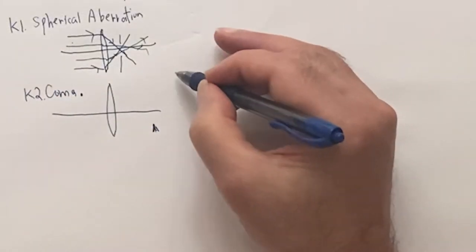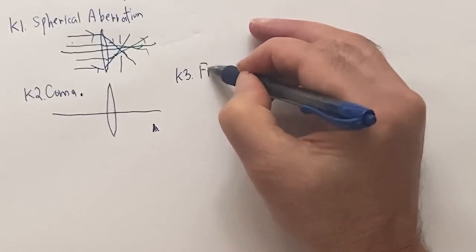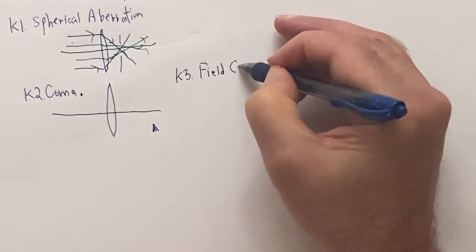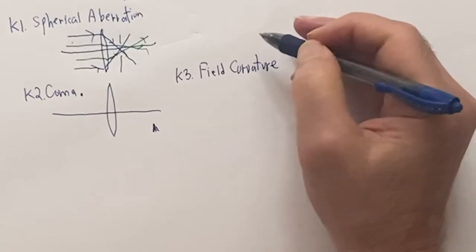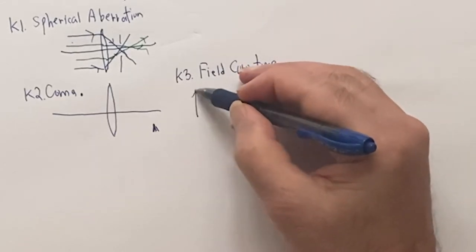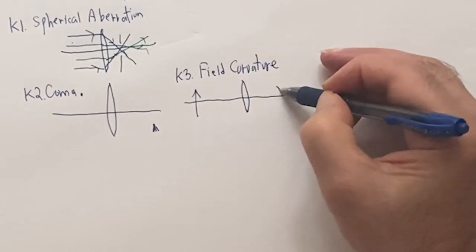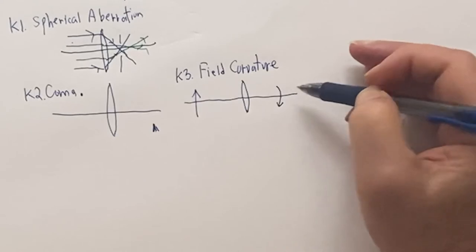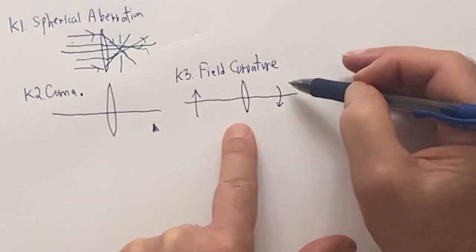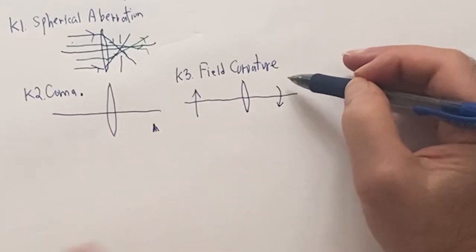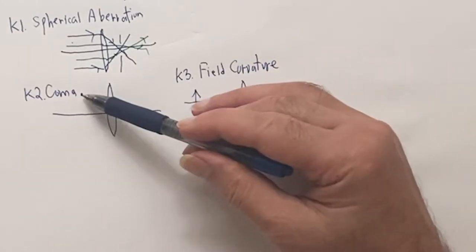We move on to K3 — field curvature, or curvature of field. An arrow standing upright, when imaged through the lens, will actually be imaged in a curve. That's not good. That's the field curvature aberration — again, an off-axis aberration.